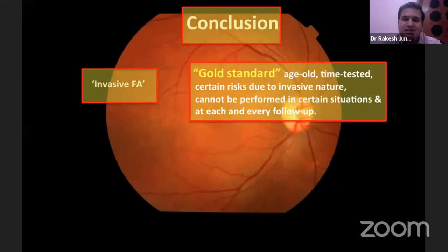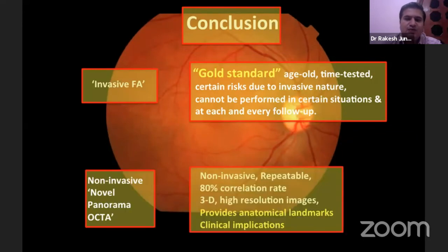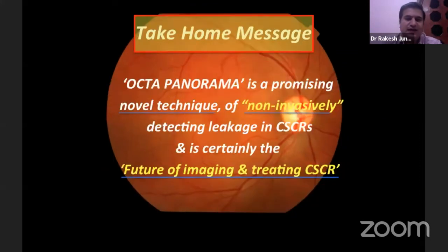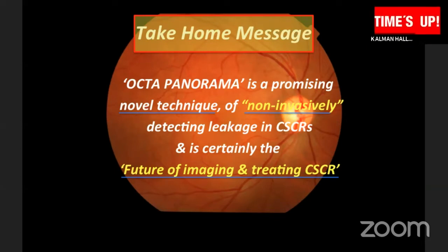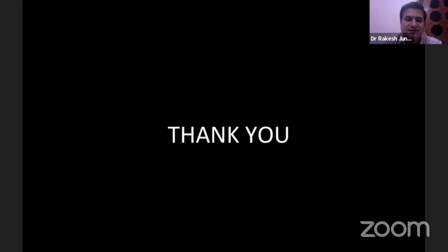The invasive FA is still the gold standard time-tested modality performable in most situations, barring nephropathy and pregnancy cases, whereas the novel panoramic OCT angio has a good correlation rate, high resolution images, provides landmarks, and will carry clinical implications in the future. The take-home message is that OCT panorama is a promising novel technique — non-invasive, can detect CSR, and we are looking at the future of imaging and treating CSRs.